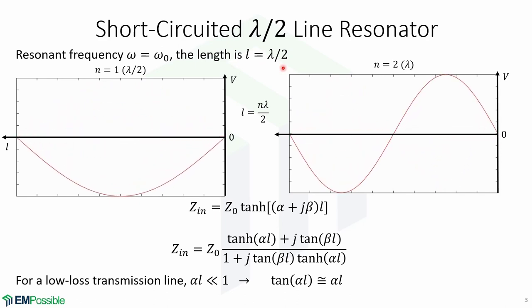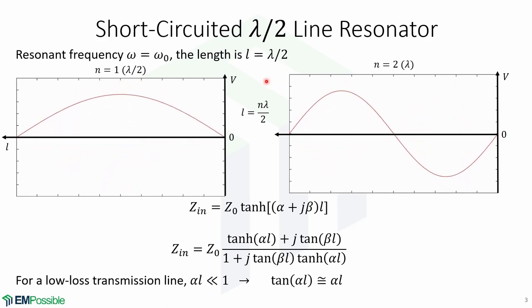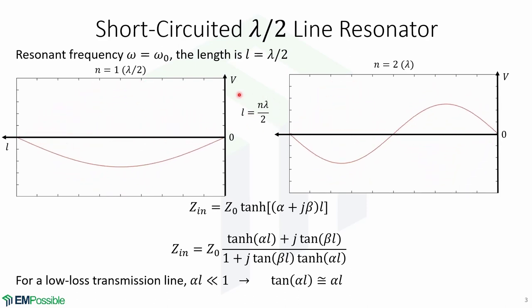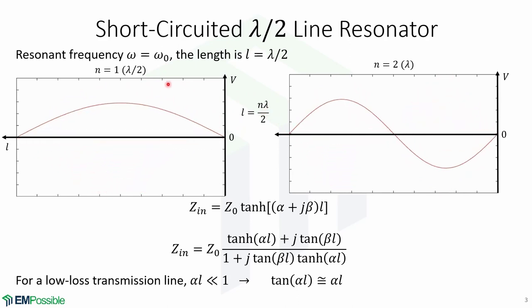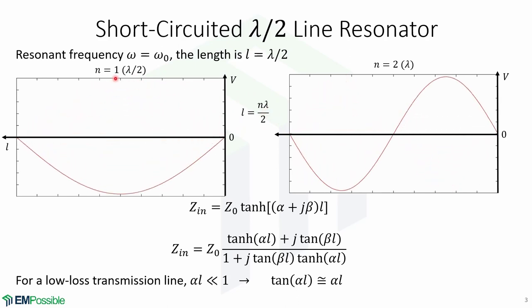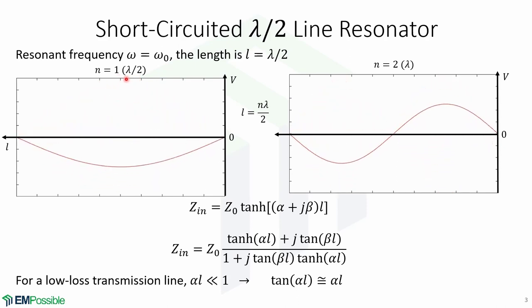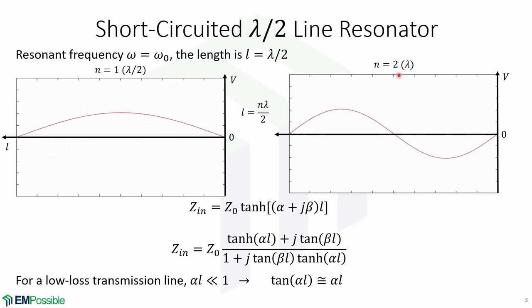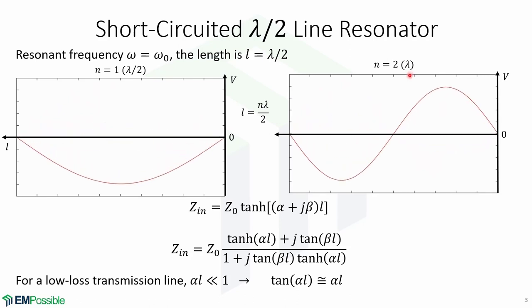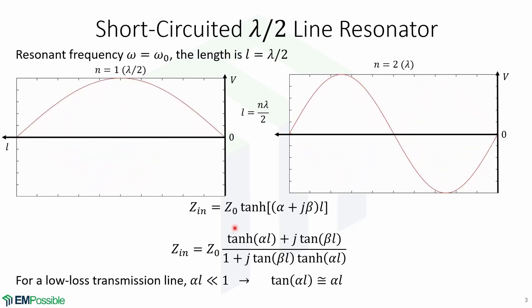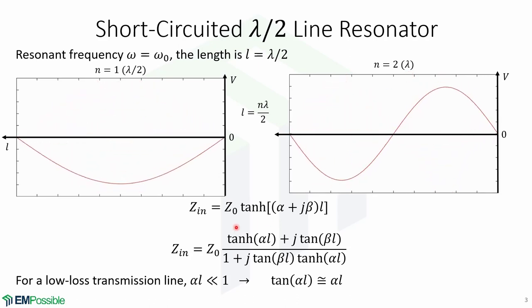Notice that there are also other resonant modes at multiples of lambda over 2, given by this expression, where n is an integer. Here is the voltage distribution when n equals 1, which corresponds to the first mode and the length is lambda over 2. Here is the voltage distribution for the second mode, where n equals 2 and the length of the line is equal to lambda. We'll first begin our analysis by finding the input impedance.